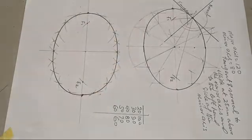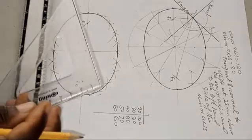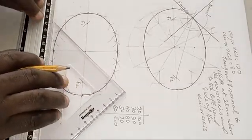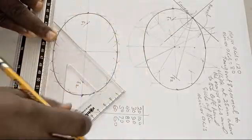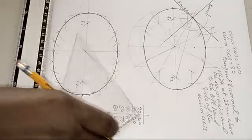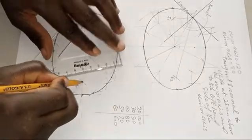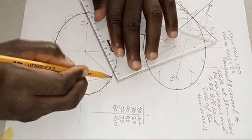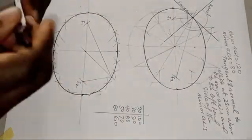If asked to draw a tangent and normal to a point 45 degrees from the center of the ellipse, use your T-square to draw a 45-degree line. The point where it meets the ellipse is the point of tangency. Connect F1 and F2 to the point of tangency, then bisect the angle formed at that point.